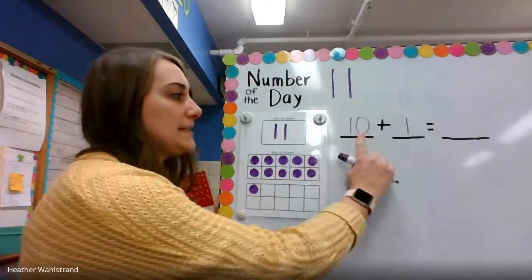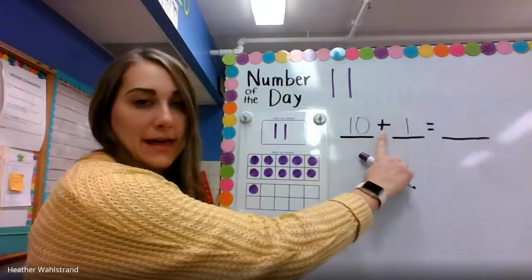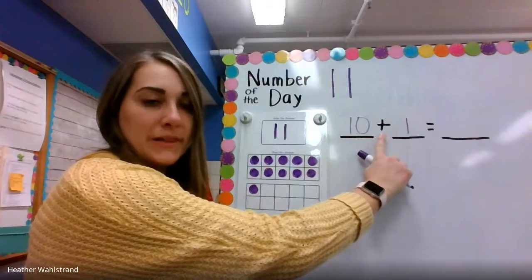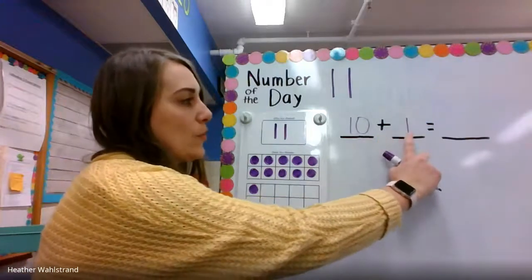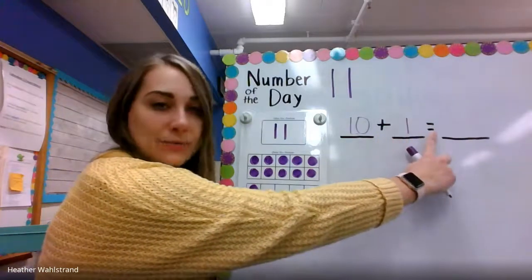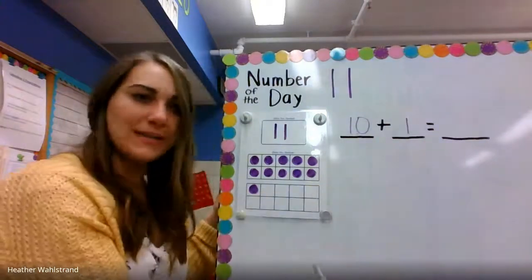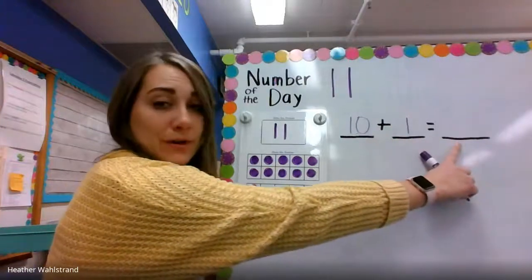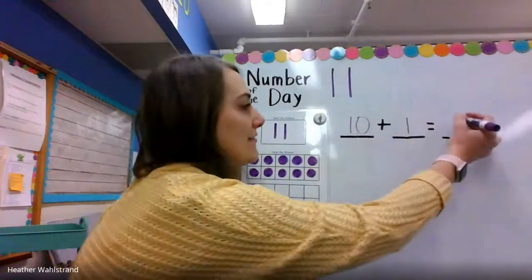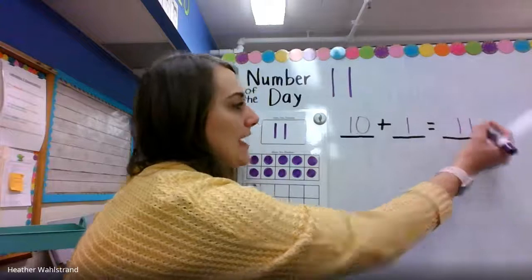This equation reads 10, and the plus sign means plus, or adding more, one more, and then these two lines mean equals, or how many all together? So, we can say 10 plus one more equals 11, and I would write my 11 at the end.